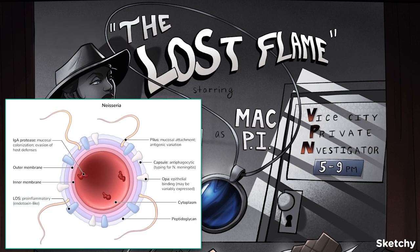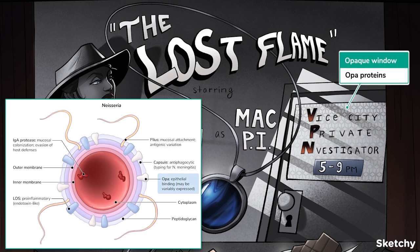The last virulence factor we need to cover is Neisseria's OPA, or opacity proteins, which are found on its outer surfaces. OPA proteins, represented by this opaque window, help Neisseria form tight bonds with one another and to host cells, which aids in bacterial colonization. Neisseria can even vary their expression of OPA proteins — and again, that's just another way Neisseria tries to outsmart the host's immune system.